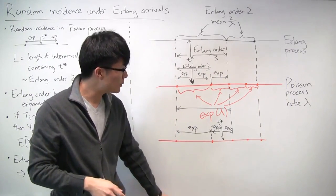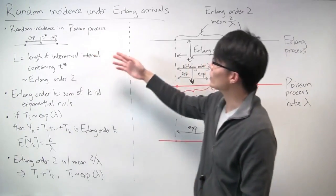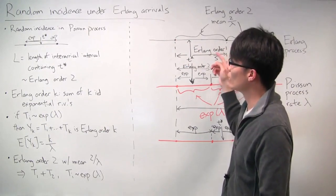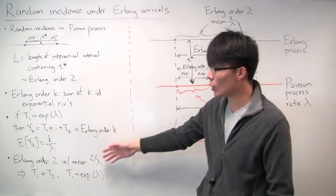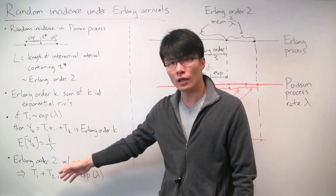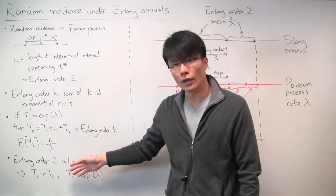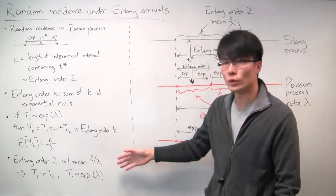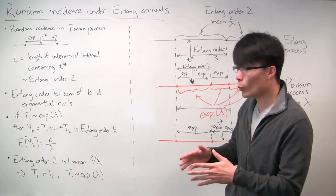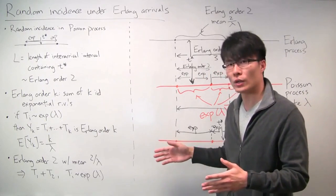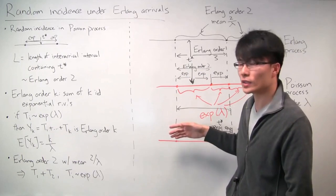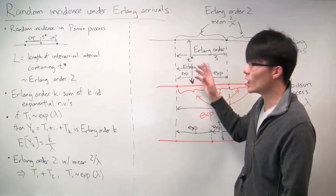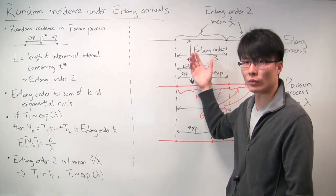In this problem, we looked at random incidence under a different type of arrival process — not Poisson, but with Erlang random variables. We used the insight that an Erlang can be reinterpreted as a sum of independent and identically distributed exponential random variables, and that exponential random variables can be viewed as the inter-arrival times of a Poisson process. By going through those steps, we were able to use what we know about random incidence under Poisson processes to solve the problem of random incidence under Erlang arrivals.